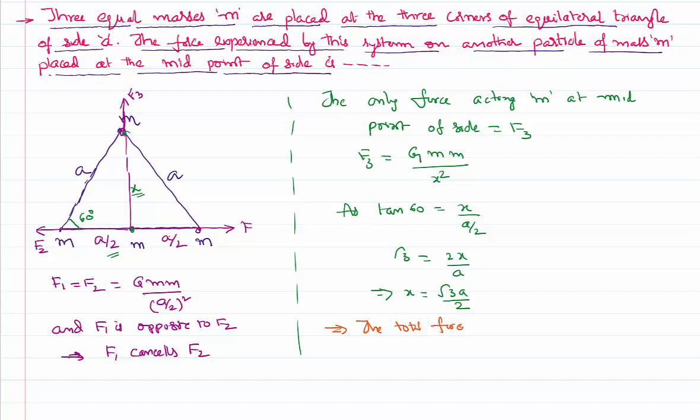On the fourth mass is F3 equal to, that is F equal to G m1 m2 by x square. X is root 3 by a to 4 square. So how much is this? G m square, 3a square by 4. So the answer is 4 by 3, G m square by a square is the resultant force acting on this particle.